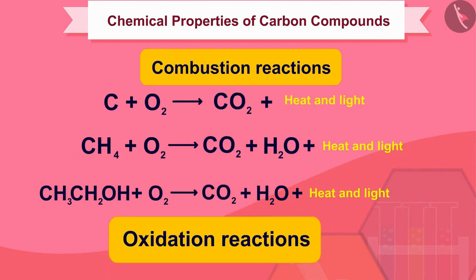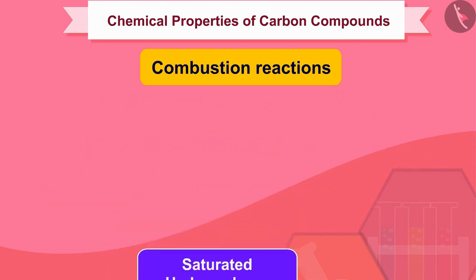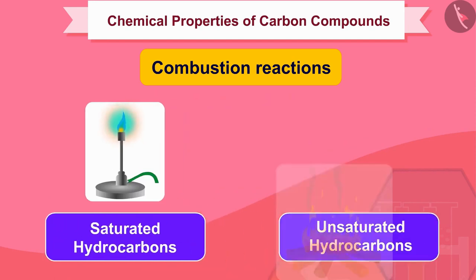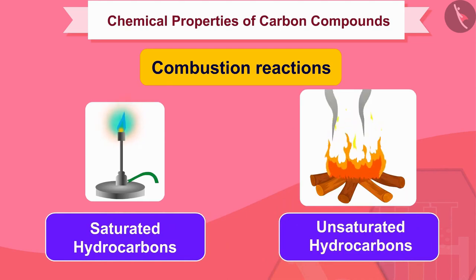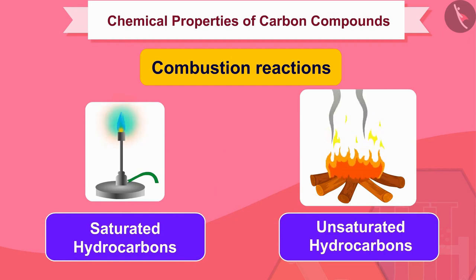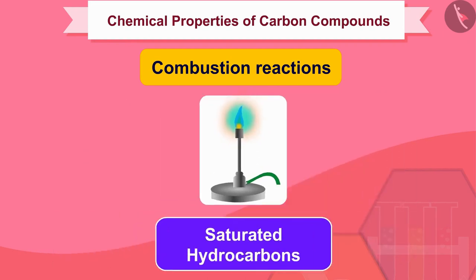These are oxidation reactions. Saturated hydrocarbons will generally give a clean flame, while unsaturated carbon compounds will give a yellow flame with lots of black smoke. However, limiting the supply of air results in incomplete combustion of even saturated hydrocarbons, giving a sooty flame.